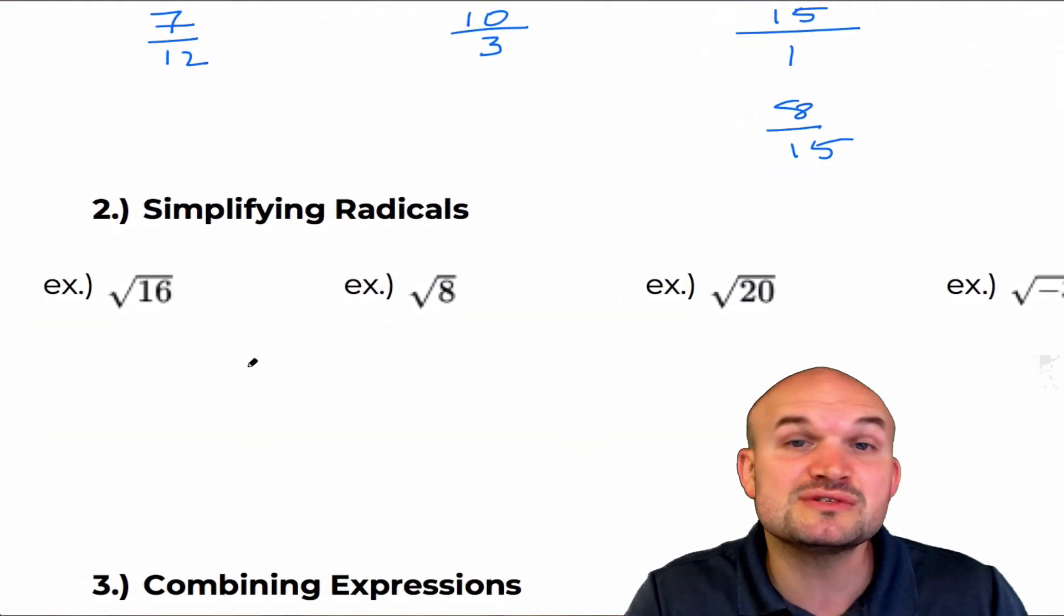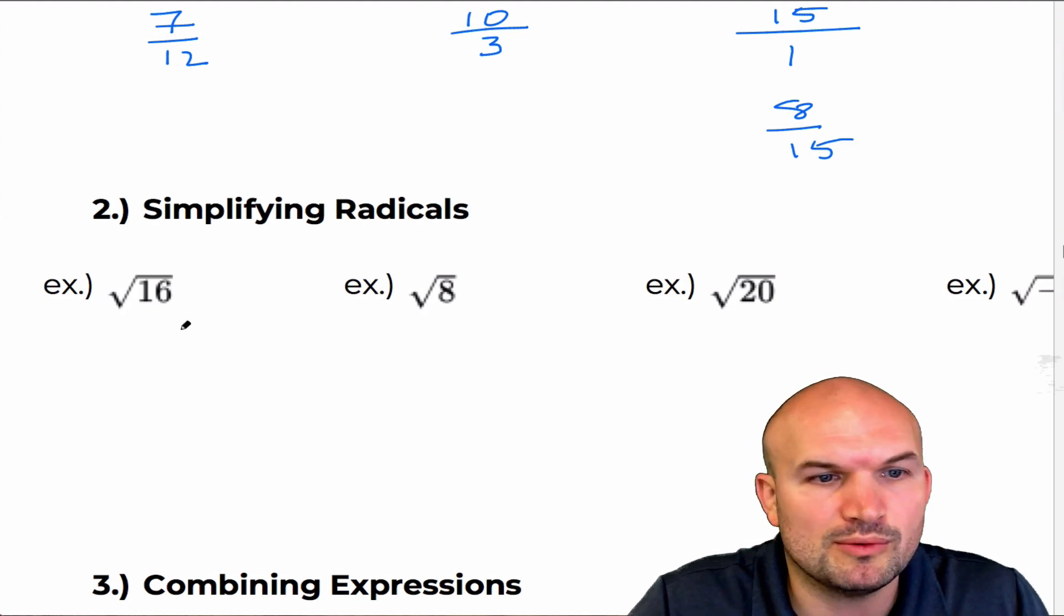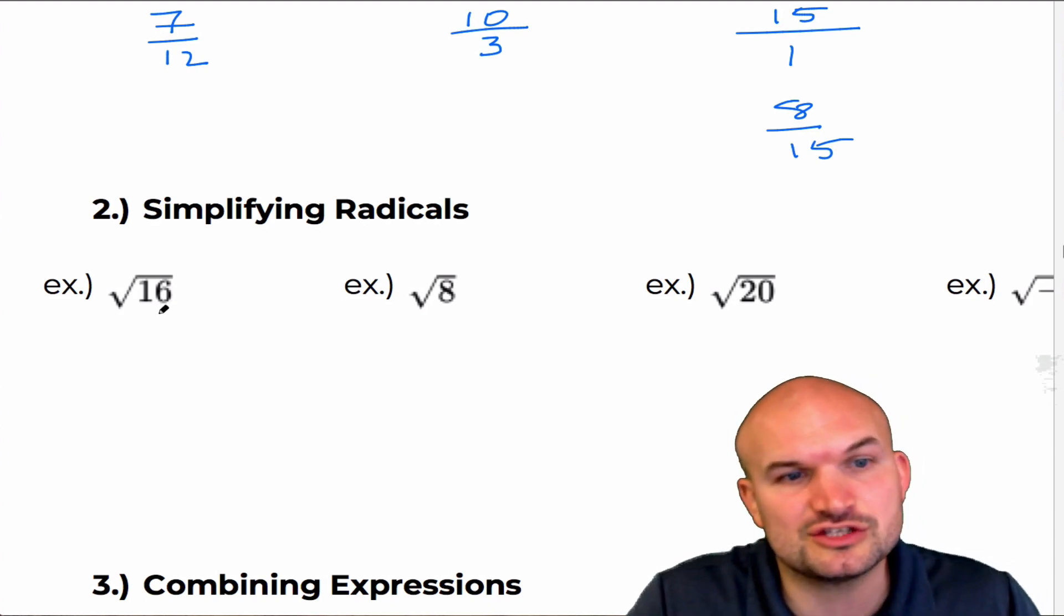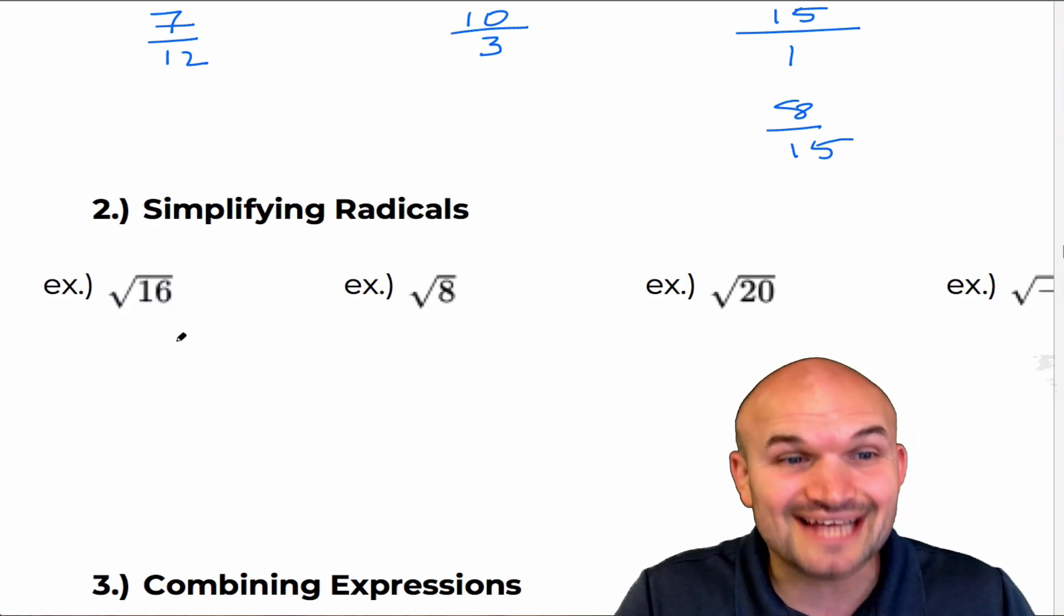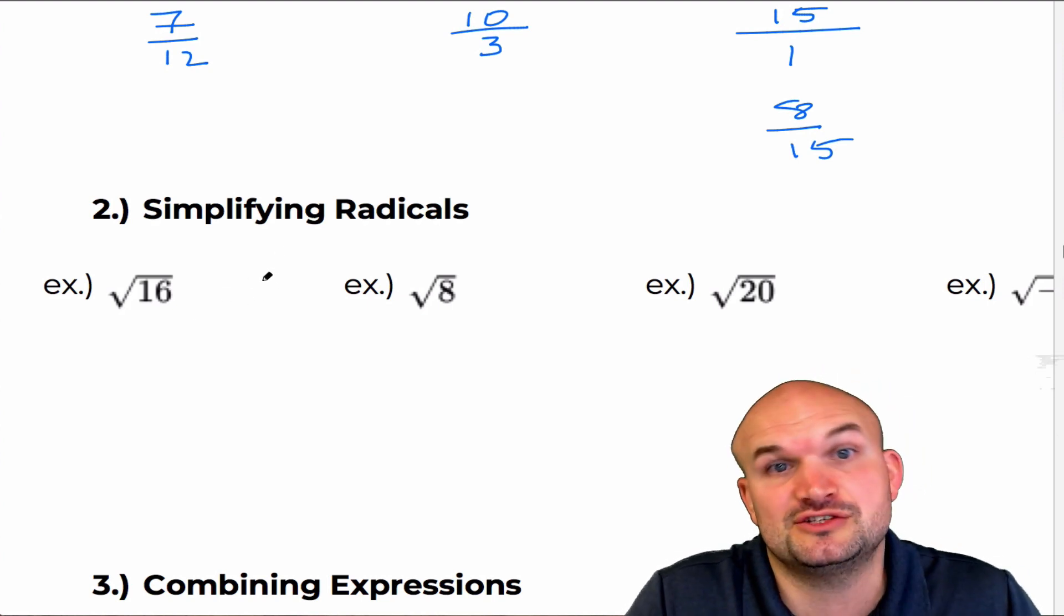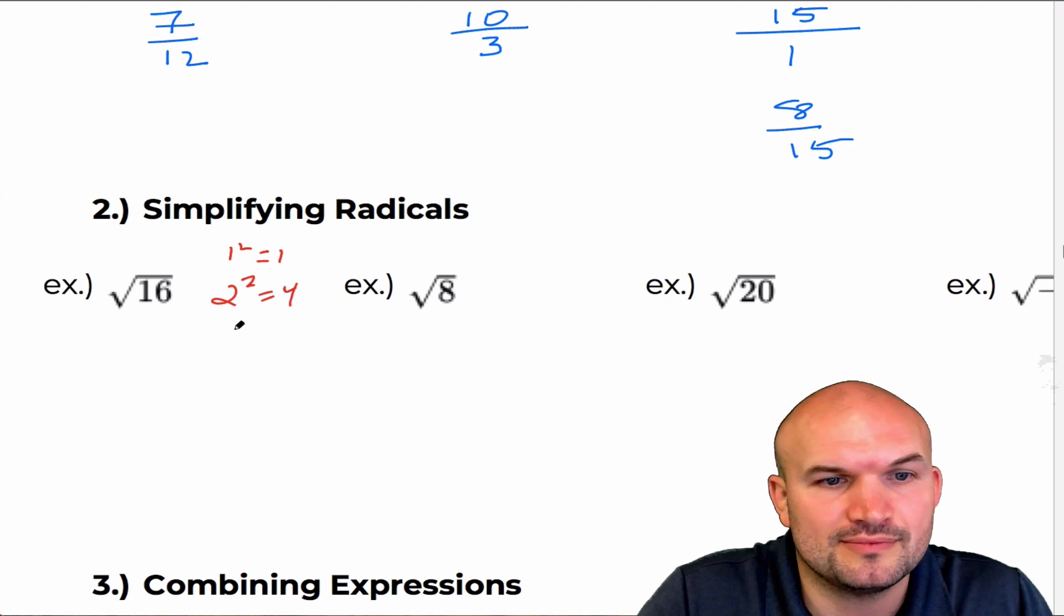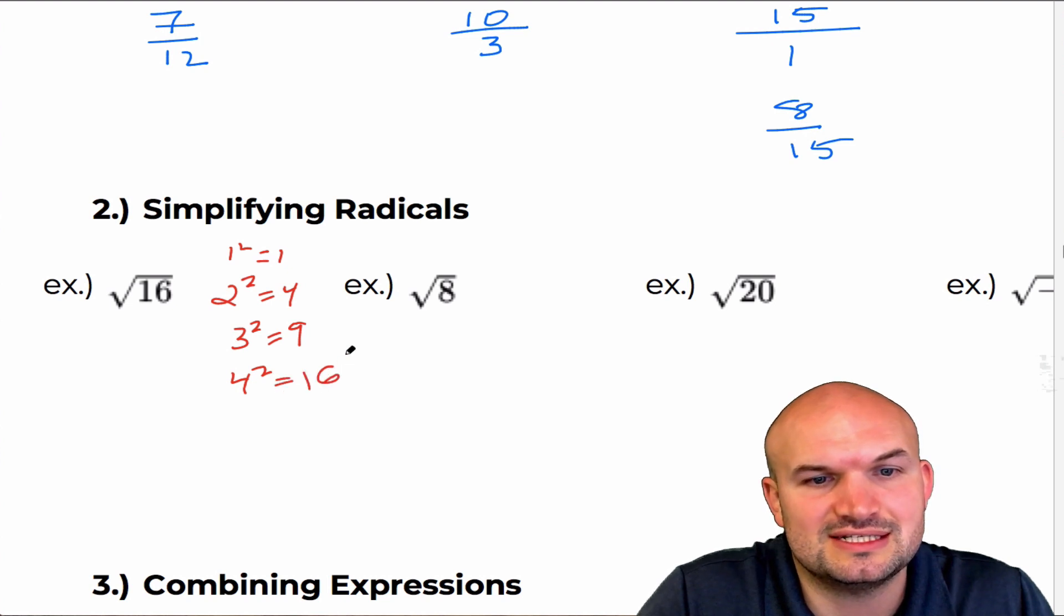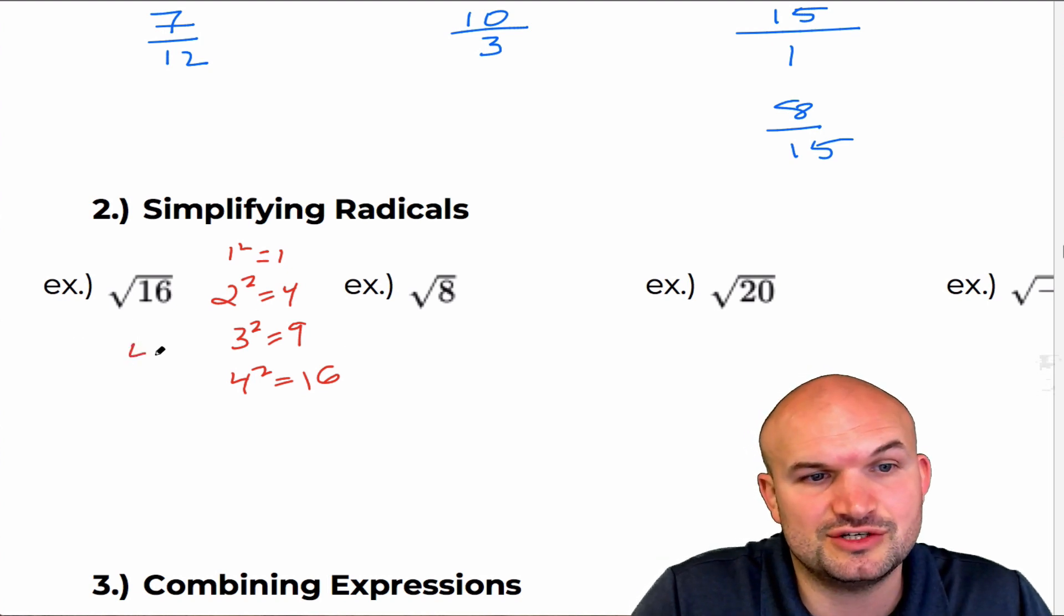All right. Moving on to simplifying radicals. So when simplifying radicals, what the square root symbol is saying is what number multiplied by itself is going to equal 16. So the main important thing is you really should know your square numbers. For instance, one squared is one, two squared is four, three squared is nine, four squared is 16. So obviously we see that four squared is 16. So the square root of 16 is just going to equal four.